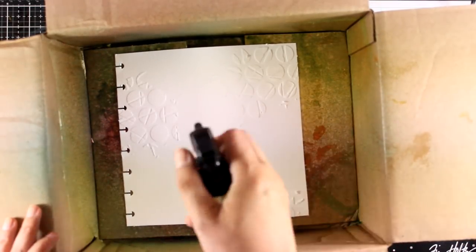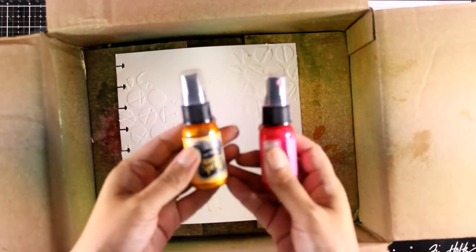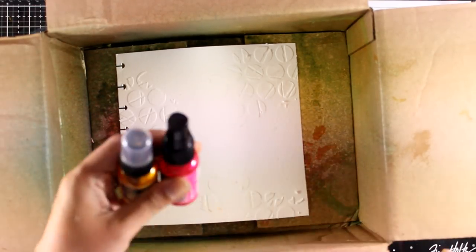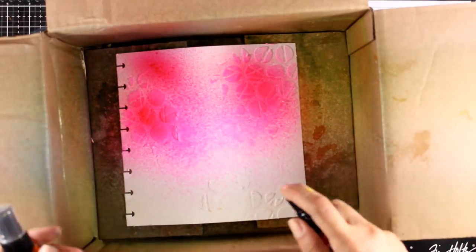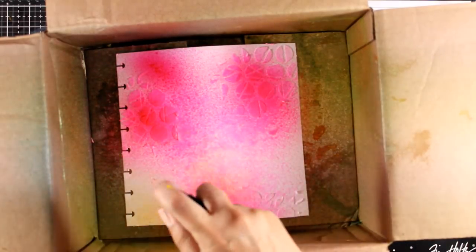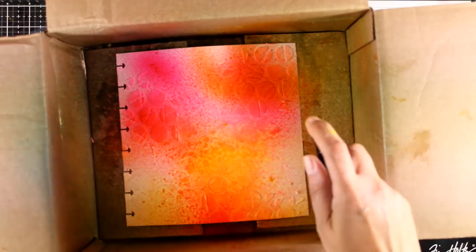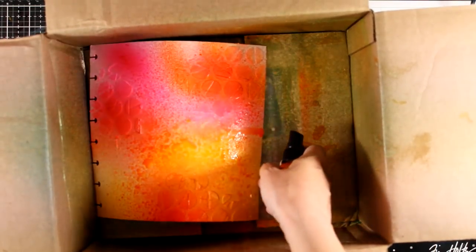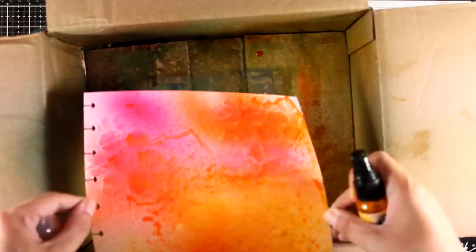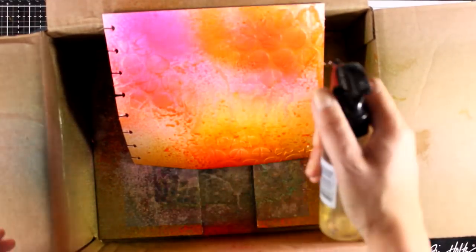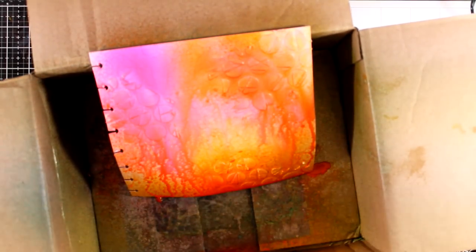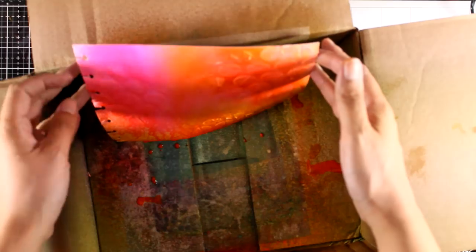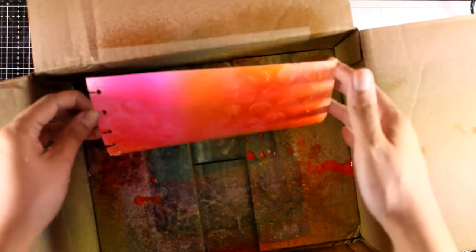Now I haven't even let that embossing paste dry and I'm going to do some spraying. So I'm going to use the shimmer sprays by Dylusions and I'm going to mix a couple of colors. But I have applied water all over my surface in the beginning which is going to help those colors blend even more. So now I'm going to add even more water and let it drip, everything blends nicely, and now I'm going to take it off the box.